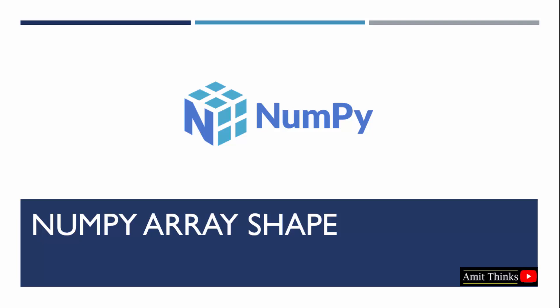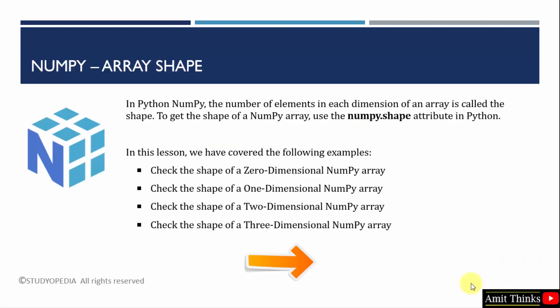In this video, we will learn what is an array shape in NumPy and how we can find the shape of an array. We will see four examples. Basically, shape is the number of elements in each dimension of an array. To find the shape, we use the shape attribute in NumPy. So to understand the concept in a better way, we have four examples.